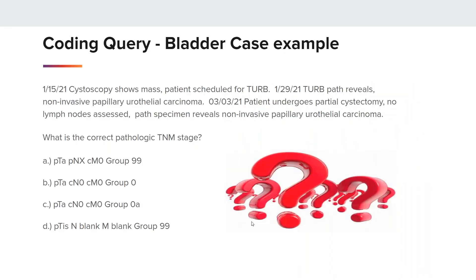Our next example is bladder. On 1-15-21, a cystoscopy shows a mass; the patient is scheduled for a TURB. On 1-29-21, the TURB path reveals noninvasive papillary urothelial carcinoma. On 1-3-21, the patient undergoes a partial cystectomy; no lymph nodes are assessed. The path specimen reveals noninvasive papillary urothelial carcinoma. What is the correct pathologic TNM stage? Is it A: PTA, PNX, CM0, group 0?